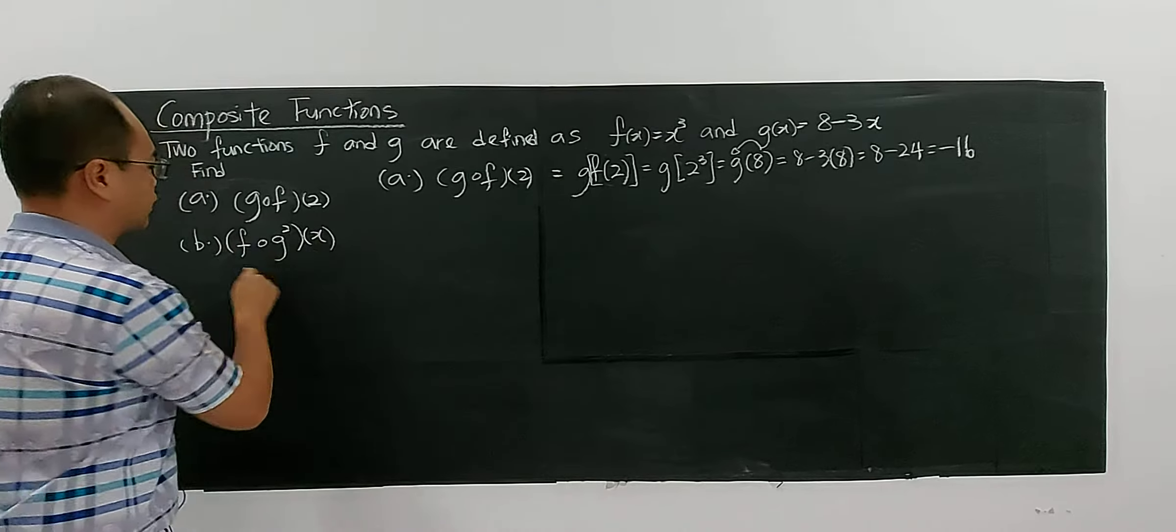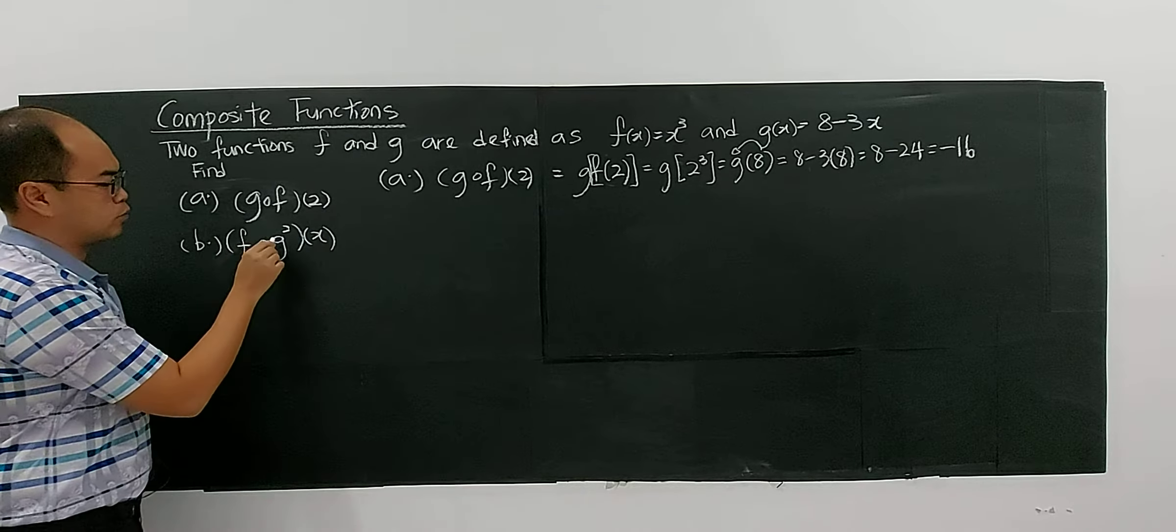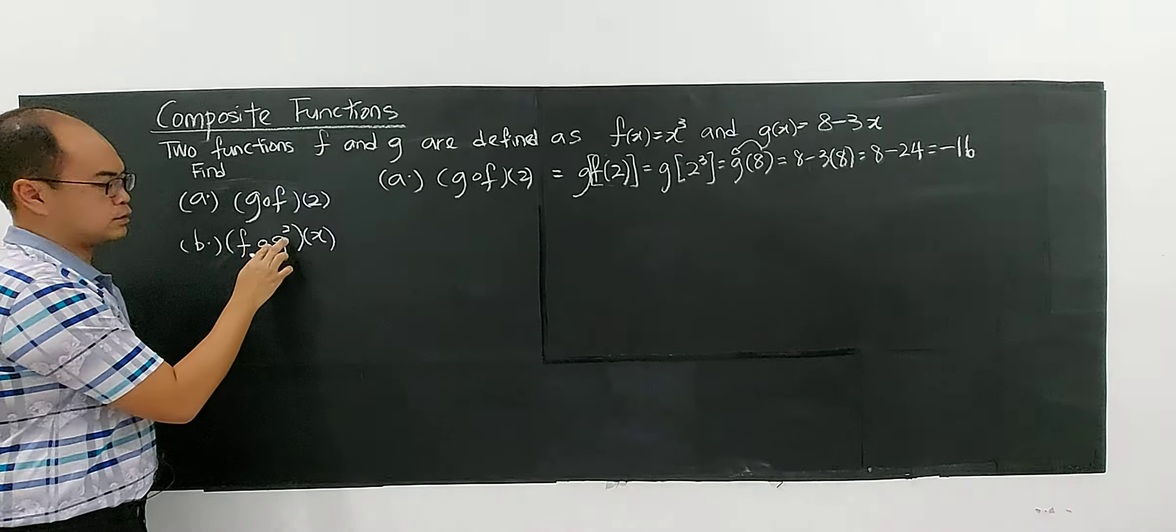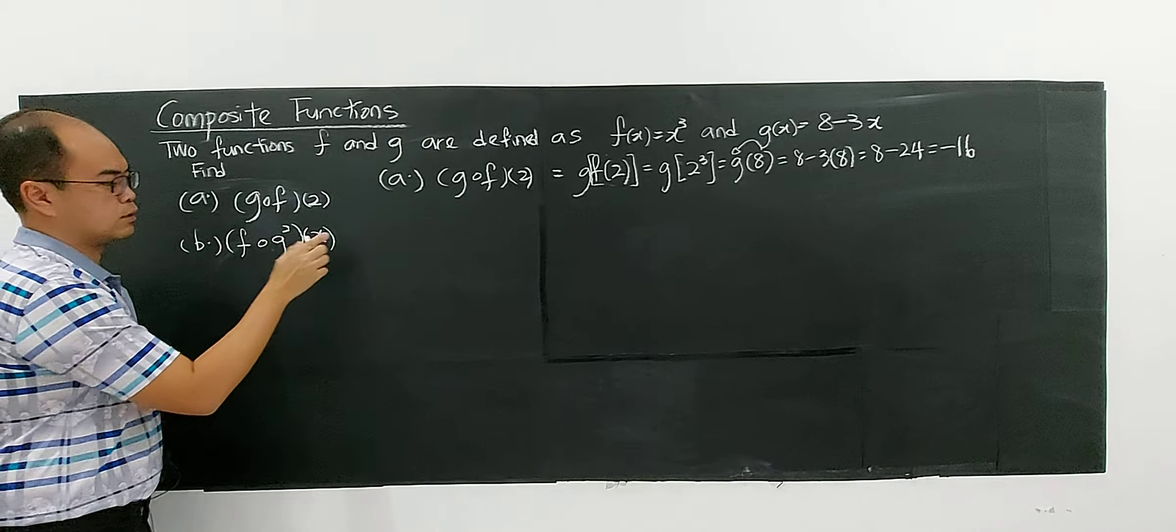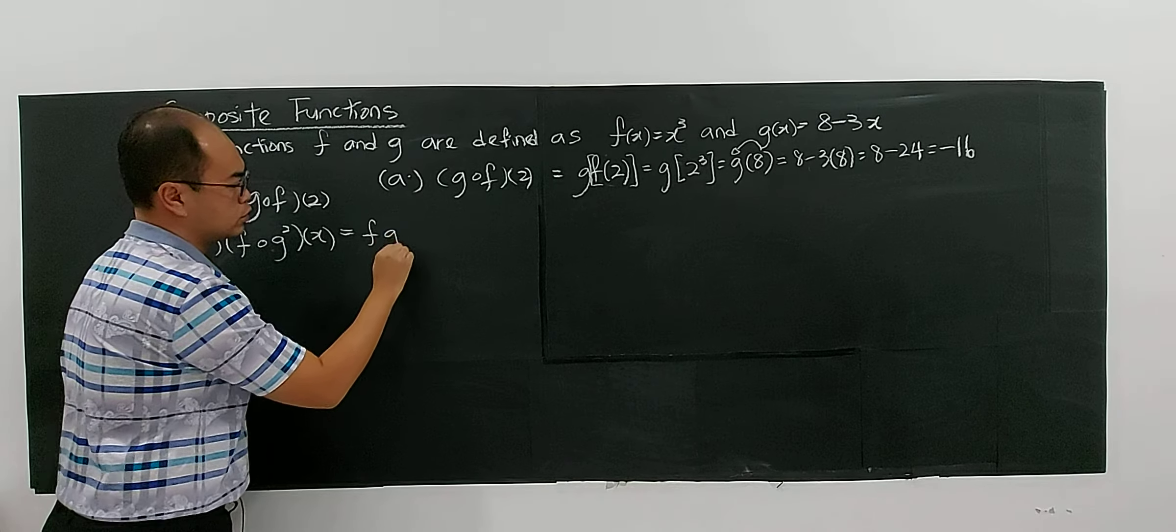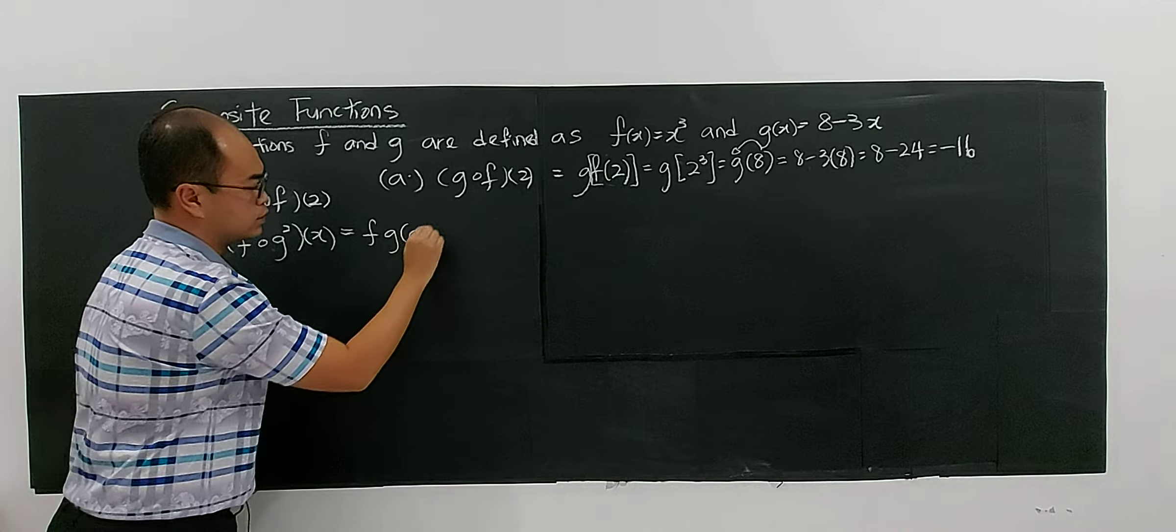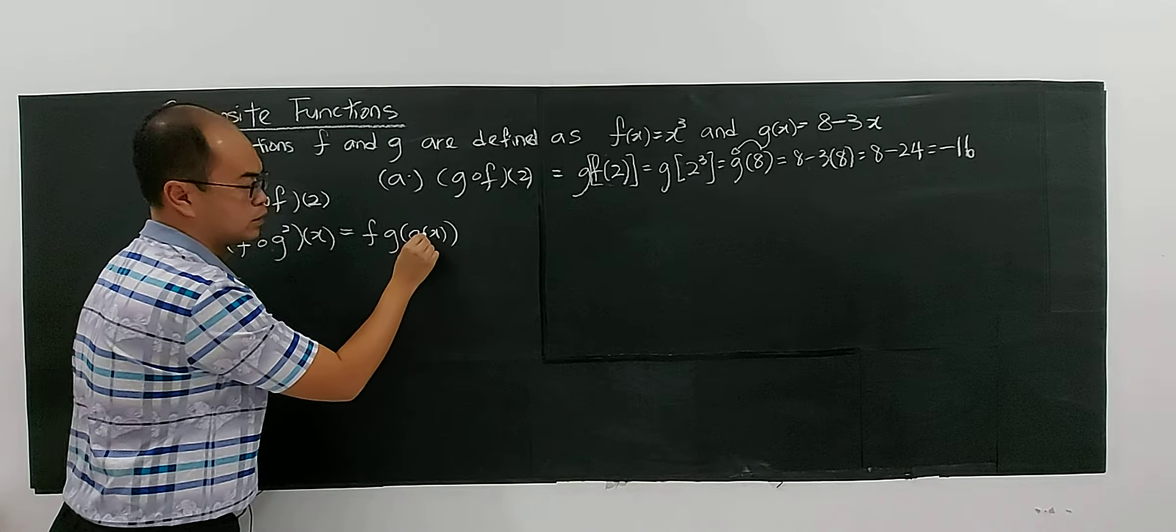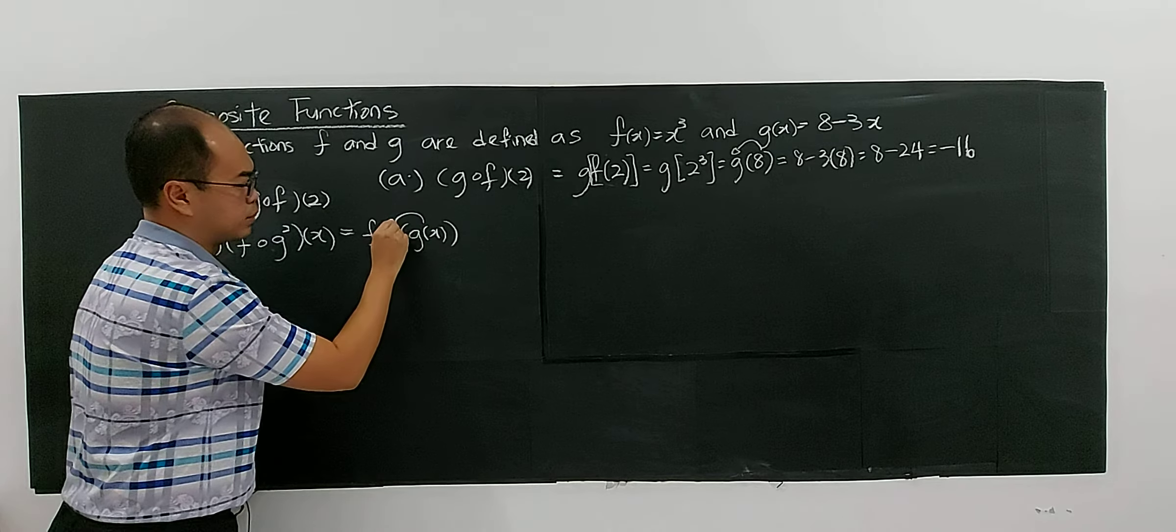Now for part b, you need to find the function f composite g composite g. You see, composite twice. This is actually f∘g², where the first input will be g(x), mapping by g first.